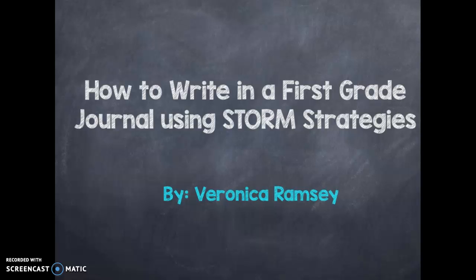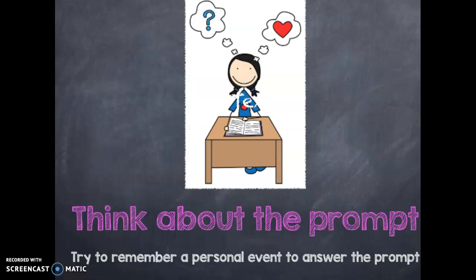Hi, my name is Veronica Ramsey and I will be explaining how to write in a first grade journal using storm strategies. This would be a journal entry for the beginning of the first grade year. The first thing you want to do is think about the prompt and try to remember a personal event to answer the prompt. For this example, we will be writing about a time we had fun at recess.